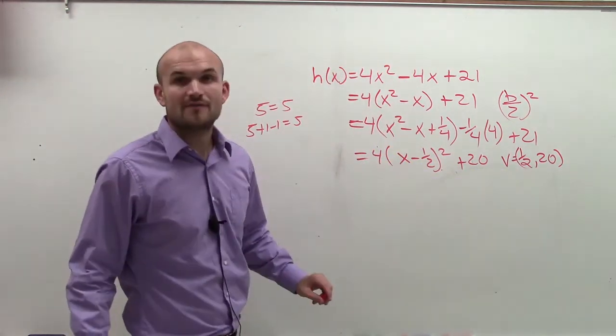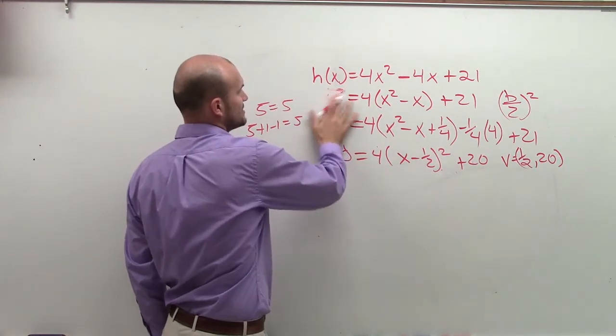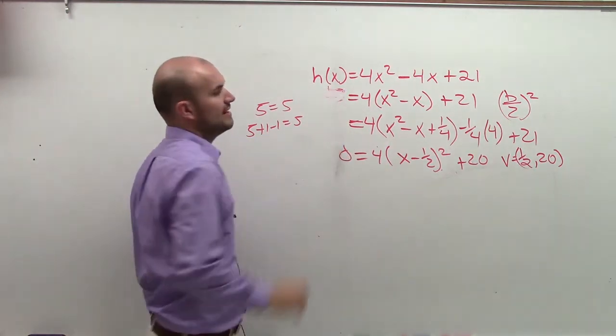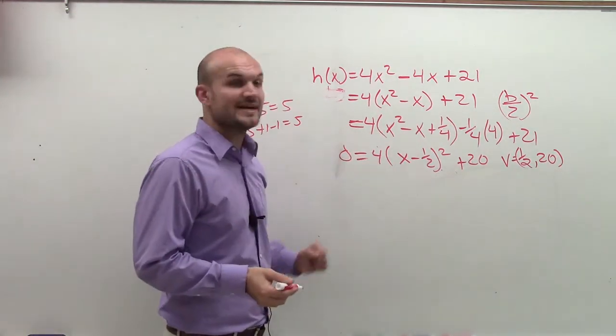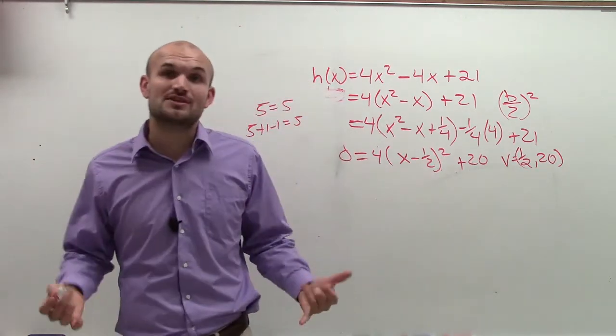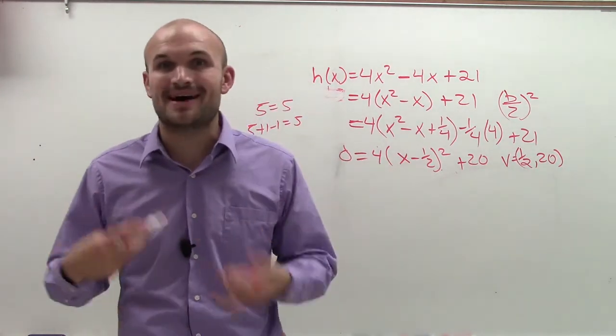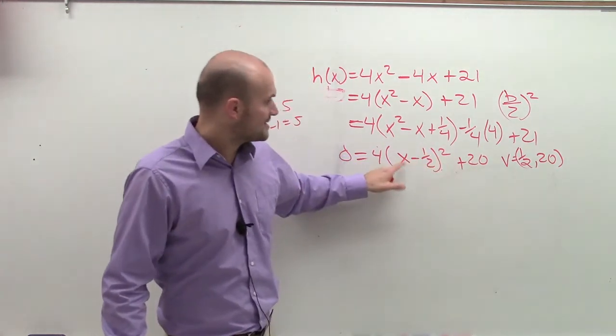The next thing we need to do is now find our zeros. So what I'm going to do is I'm going to say I want h of x to equal 0. Every time this is all h of x, now I want h of x to equal 0 because that's where the graph is going to cross. So now h of x equals 0. What I'm going to simply do now is solve for x.